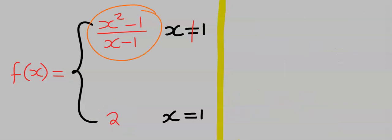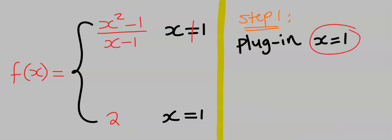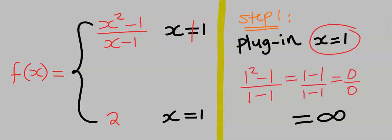For the upper arm, which is the left-hand limit, plug in x equal to 1, and we got undefined. To avoid this, that's why the condition says x must not be equal to 1.